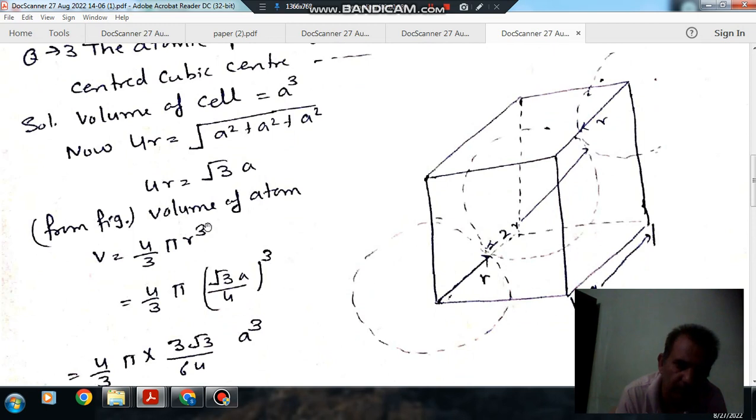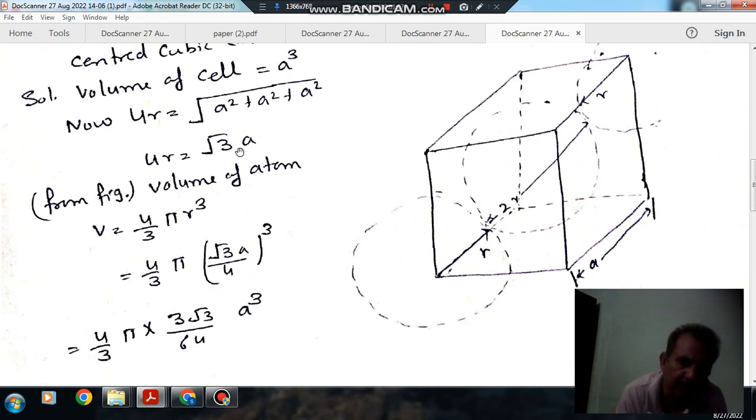Now the volume of each atom is four by three pi R cube because it is spherical shape. And R in terms of A is root three A by four.